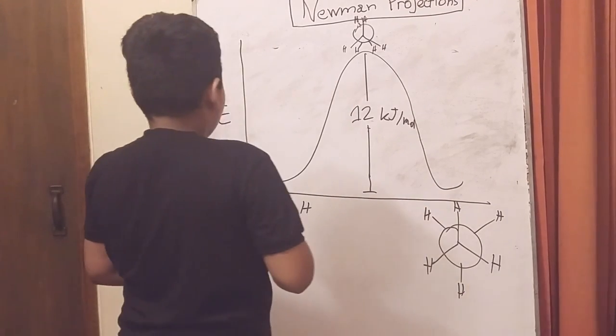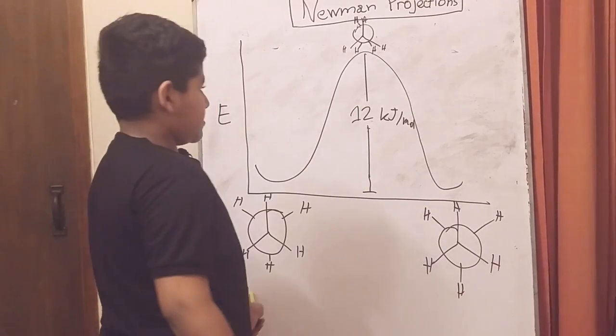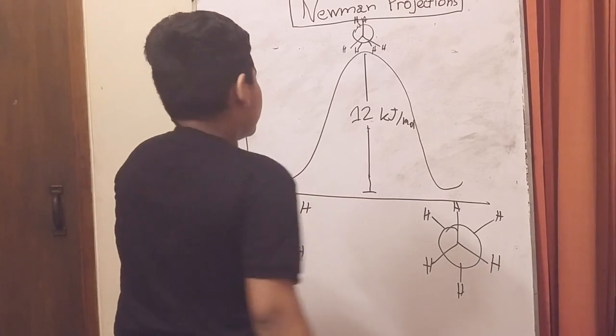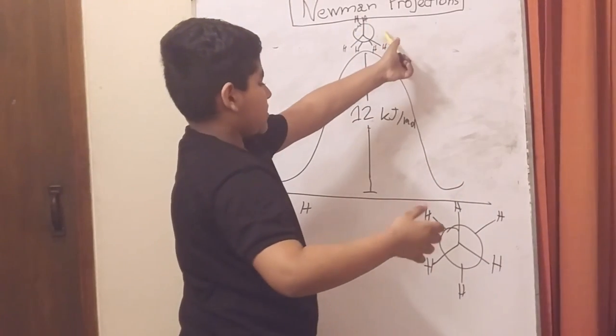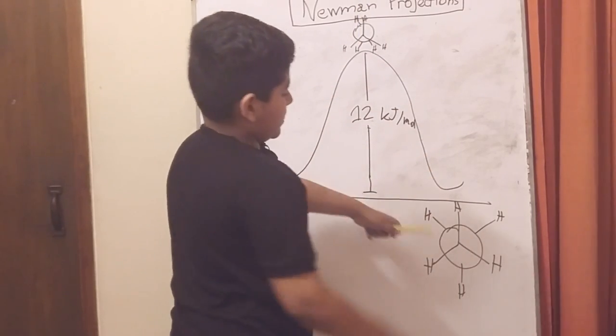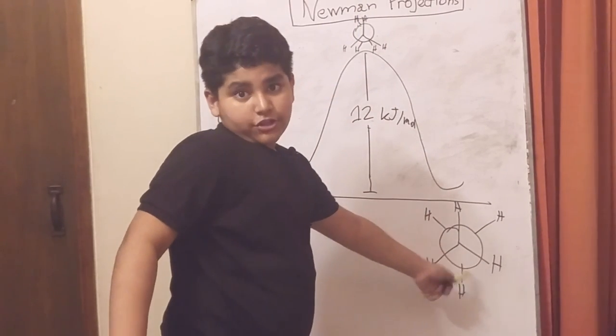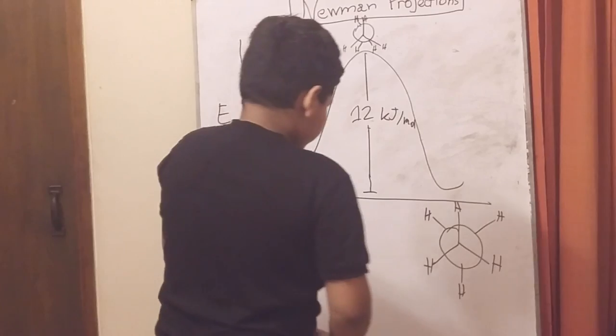These conformations will change the molecular energy. Let's say we have an eclipsed molecule, now it rotates to a staggered form on the top, and then it rotates back to its initial eclipsed form.